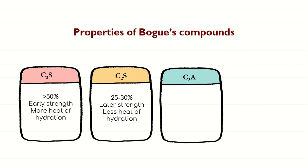Next we have C3A, tricalcium aluminate. This plays a major role in the characteristics of fresh concrete. The reaction of C3A with water is very fast — that is the reason we add gypsum to prevent flash setting. Flash setting means the immediate stiffening of cement paste, which occurs due to the reaction of C3A and water. To prevent this flash set, we add gypsum by weight of around two to three percent at the time of grinding the cement clinkers.